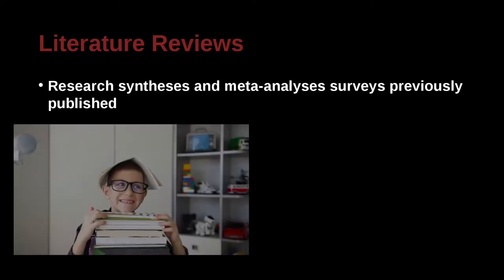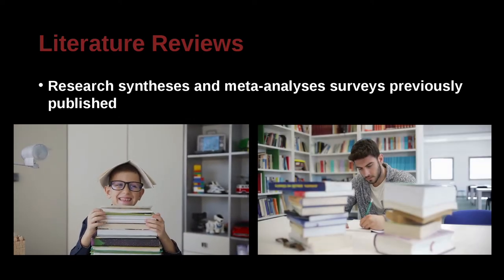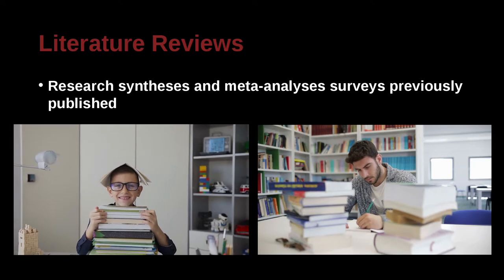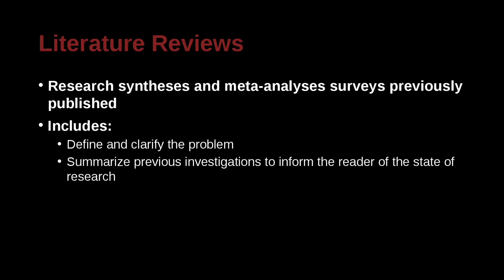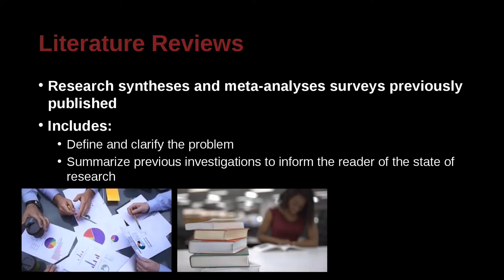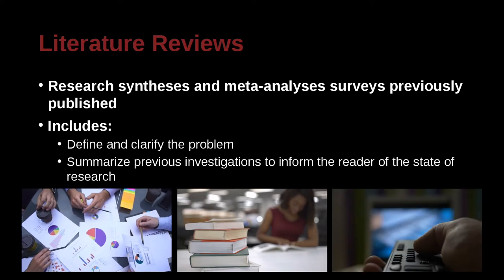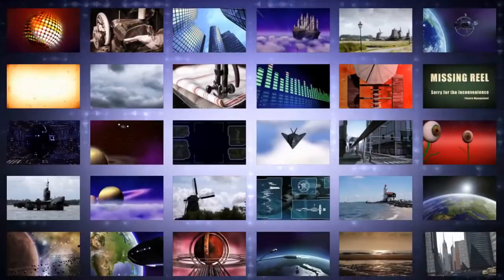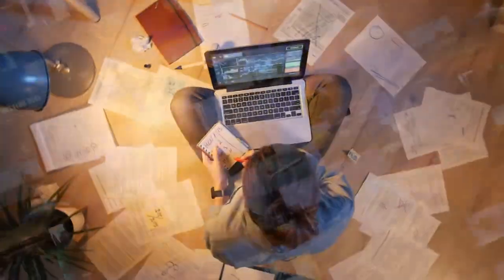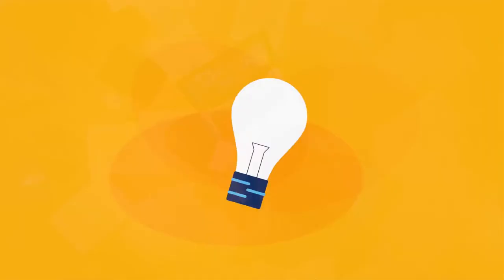Literature review research is a little bit different. A literature review focuses on collecting information that's already been published — nothing new. It's totally focused on existing work, basically saying what's happened up until now. This can include things like defining and clarifying the issue, summarizing research papers, books, videos, and documentary movies that have been published — maybe tens or hundreds or more.